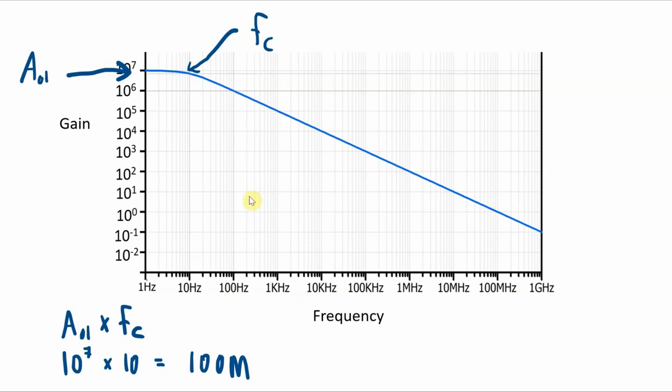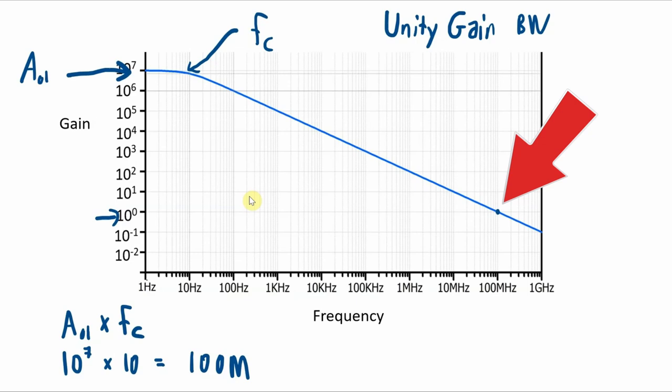Now, here's an interesting thing. The gain bandwidth product is sometimes specified as the unity gain bandwidth. And this is the frequency at which the open loop gain drops to one or zero dB. And then if you look at the frequency at that point, that's the unity gain bandwidth. So for this particular op amp, that's where the gain is one. That's the intersection there on the frequency response curve. And look, that's at a hundred megahertz.